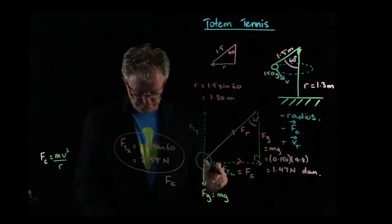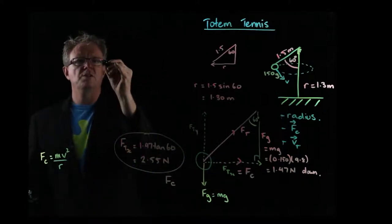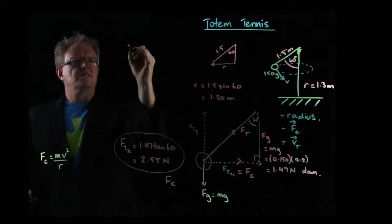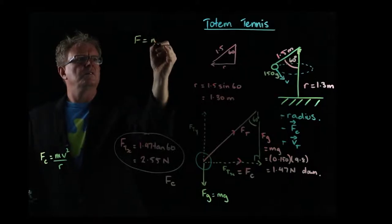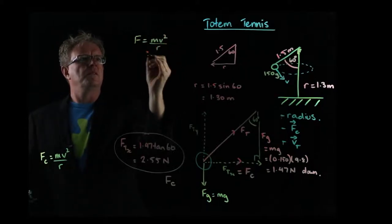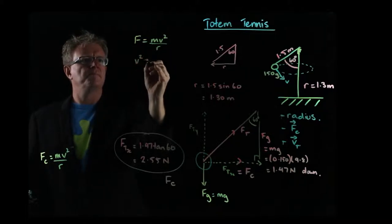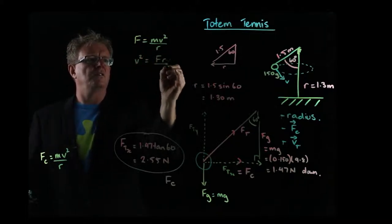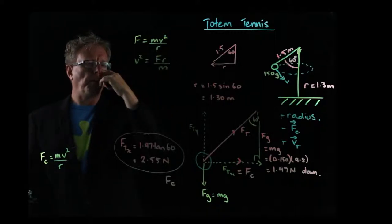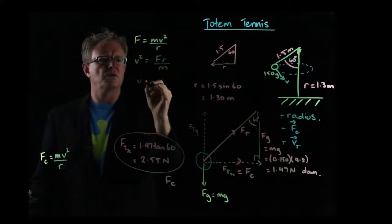So let's do that. So rearranging this equation here first. Let's just start off with this here, like that. And then we're going to times both sides by r and divide by m. So we get Fr divided by m. And then, of course, we take the square root of that.